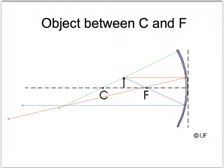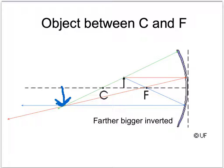If we put the object closer than the center of curvature — between the center of curvature and the focal point — and draw our three rays (in parallel out through F, in through F out parallel, and in line with C), you get an image farther away that's bigger than the object. If you're watching this on a data projector, that's exactly what you're seeing: the object is put really close to the focal point, so you see a much larger image much farther away on the screen. The image is farther, bigger, inverted, and real — because you can see it on a screen.